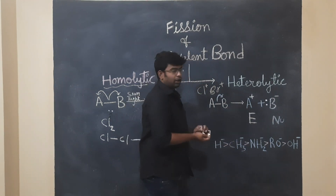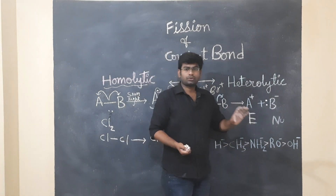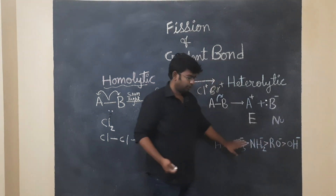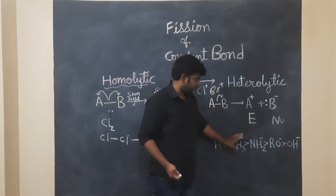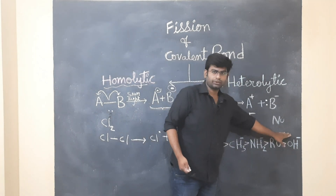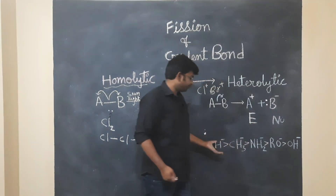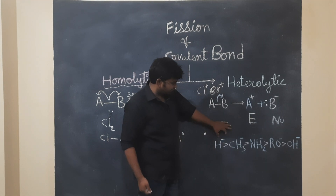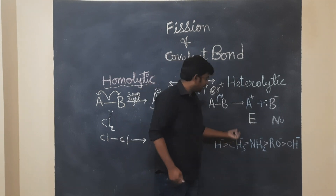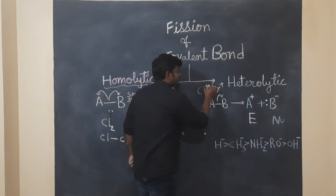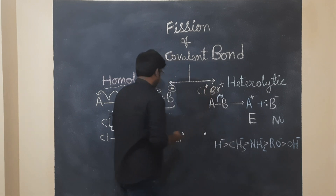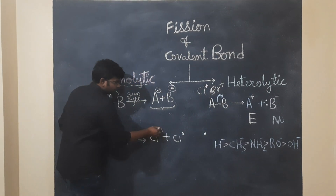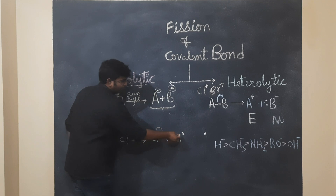Nucleophile is electron-rich in nature. Example: in the case of nucleophile, you have negative charge, and electrophile is positive. And free radicals have one unpaired electron.